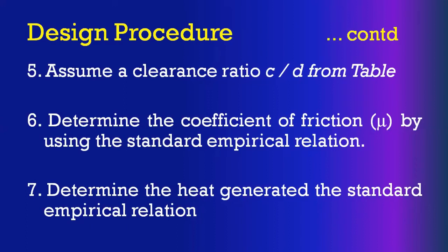The sixth step is to determine the heat generated using the standard empirical relation. Heat generated: H_g = μ × W × V, where μ is the coefficient of friction, W is the bearing load, and V is the rotational velocity of the bearing.